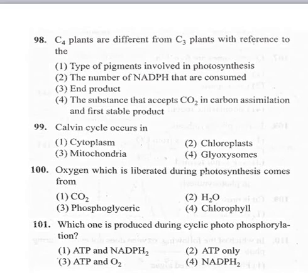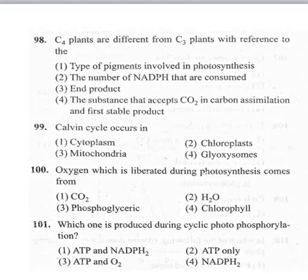100th question: oxygen which is liberated during photosynthesis comes from — option 1 carbon dioxide, option 2 water, option 3 phosphoglyceric acid, option 4 chlorophyll. Again this is repeated: oxygen liberated during photosynthesis comes from water. Correct option is second: water.